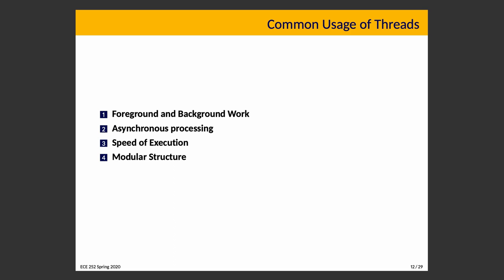The fourth common usage of threads is modular structure: a program that does a bunch of different things can be given a certain structure through threads, where each thread is assigned to a specific job. When there's something for that thread to do, it does its job. This kind of structure is common in processing tasks — you have workers for stage one and workers for stage two, where a worker is a thread. You end up with an assembly line-type structure.